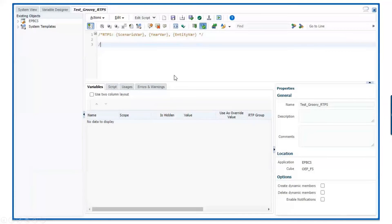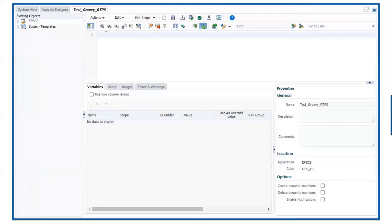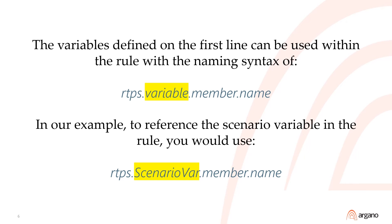Now we can begin our script. The variables are now ready to be used in the rule with their Groovy names. The Groovy syntax for each of the variables defined on the first line is in the format: RTPS period name-of-the-variable period member period name. So in our example, the scenario variable for this rule would be RTPS.scenarioVar.member.name.